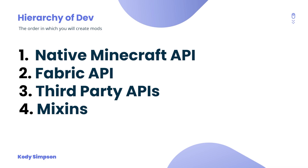The number one place to start when adding a feature is using the native Minecraft API itself — the server code, client code, and all that. This should be the foundation of your mod. When you run out of capability there, move to the Fabric API. The Fabric API is lightweight — it only adds what you need, not everything. If the Fabric API doesn't have what you need, use a third-party API built on top of Fabric and the native Minecraft API.